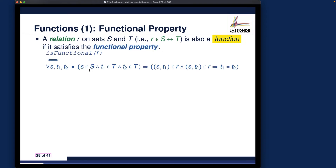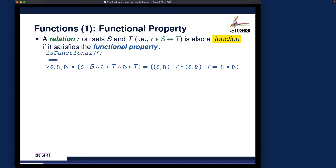We define the functional property as: r is functional if and only if a certain condition holds, defined using universal quantification — which we learned about when we spoke about predicates. For every s, t1, and t2, the antecedent specifies typing constraints: s is a member of S, and t1 and t2 are both members of T. T1 and t2 may or may not be the same.